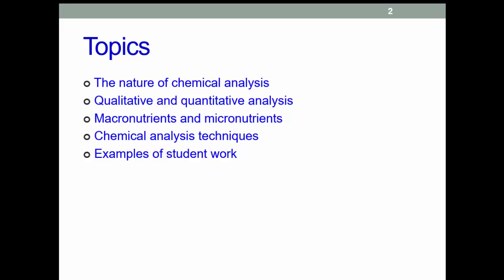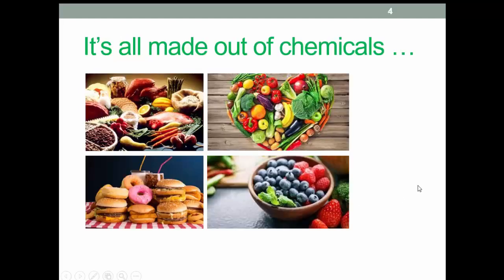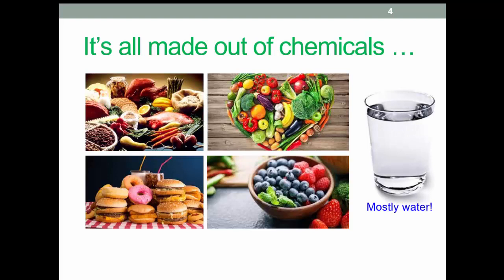Let's talk about some examples of student work. So, the nature of chemical analysis - it's all made out of chemicals. You often hear people say this food contains chemicals. Well, of course it does. Proteins, carbohydrates, vitamins, minerals, and phytochemicals are all chemicals. As usual, we point out it mostly contains water, but there's a wide range of different things we can analyze chemically in food.